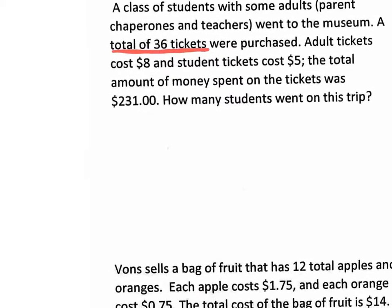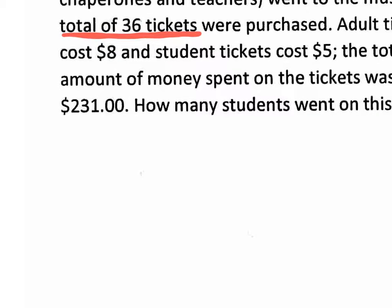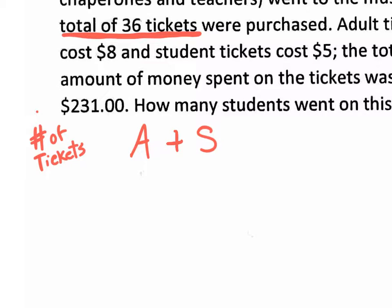We're going to have to write two types of equations. One equation is based on the number of items — in this case, the number of tickets. We're dealing with museum tickets. Do we know how many adult tickets were sold? No, so we put A. Do we know how many student tickets were sold? No, so we put S. Whatever A plus S equals, we know the total is 36 tickets. So: A + S = 36.